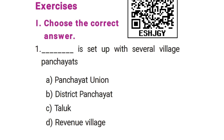The first section is choose the correct answer. The first question is: blank is set up with several village panchayats. Options: Panchayat union, district panchayat, Thaluk, revenue village. The correct answer is option A, Panchayat union.